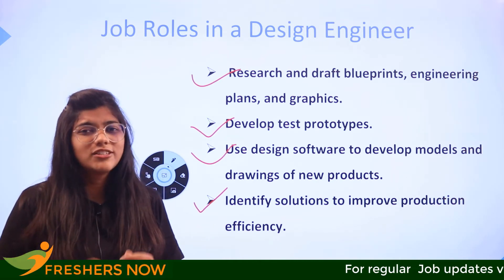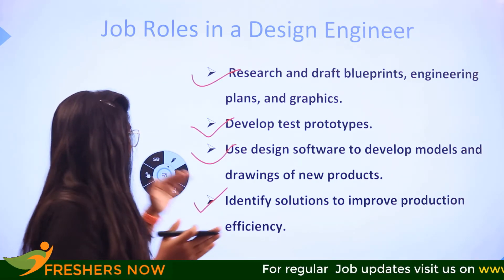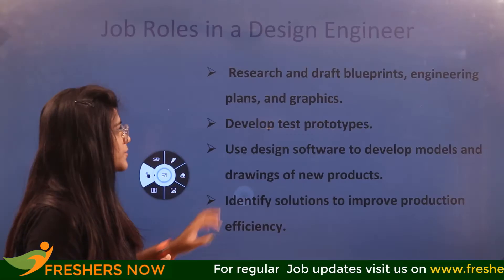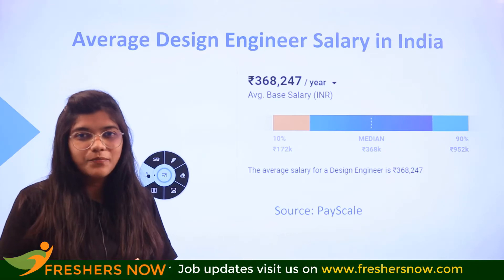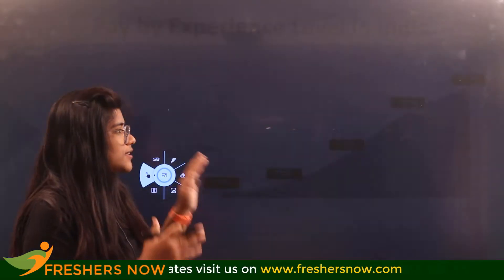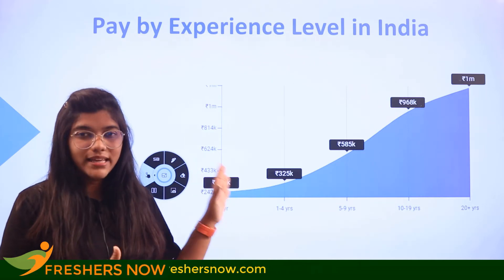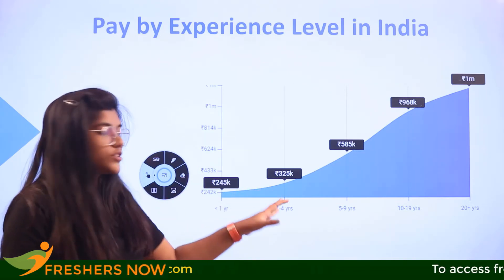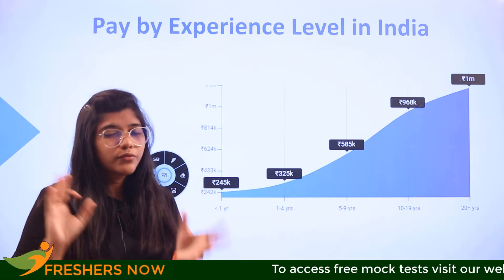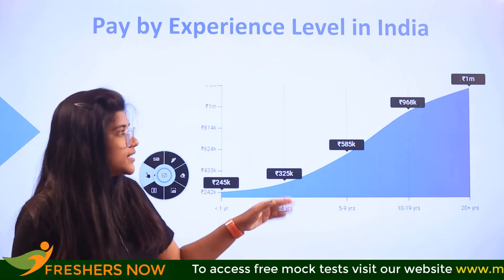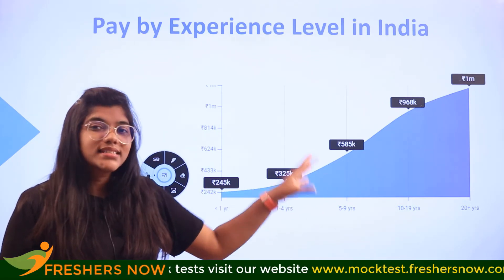Being a design engineer is not an easy job, but the pay reflects that. On an average basis, it is around 3.68 lakh per annum. Looking at a professional pay-by-experience graph, from year one to year four the growth may not be dramatic, but after five years or so it shoots right up.